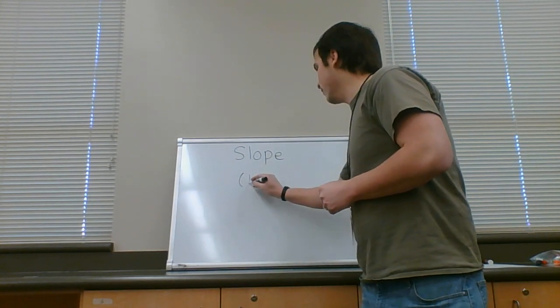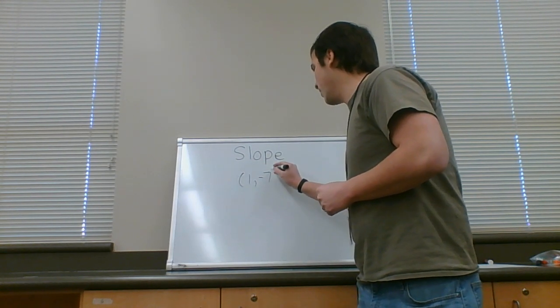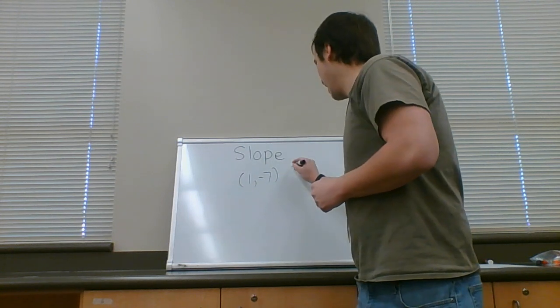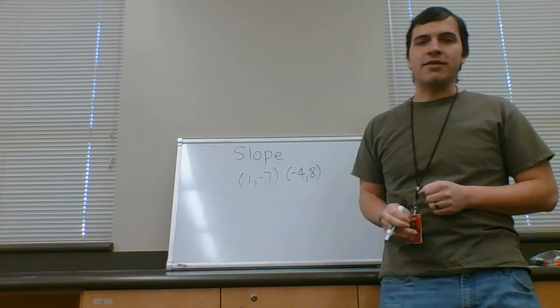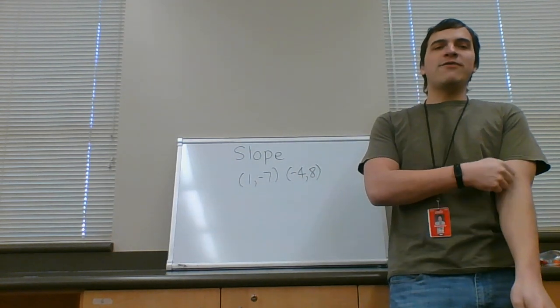Okay, we have, in this case, (1, -7) and (-4, 8). These are our lovely two points. To do this, first we're going to find the slope.